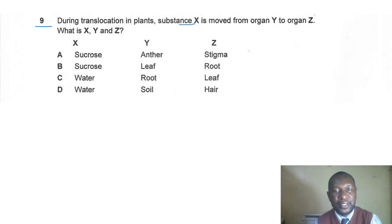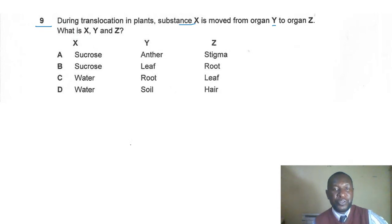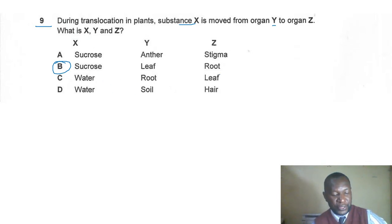Question nine: during translocation in plants, substance X is moved from organ Y to organ Z. What is X, Y, and Z? The correct answer is D — translocation involves the transport of sucrose from the leaf to the roots or any other storage organ.